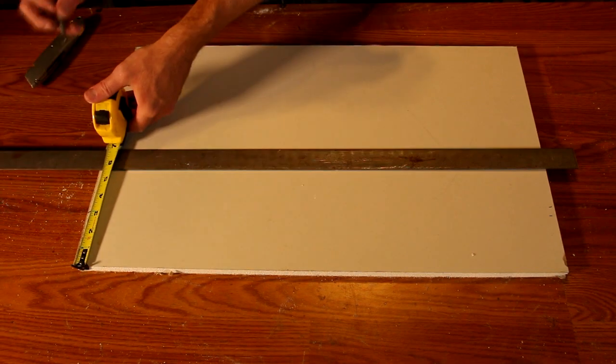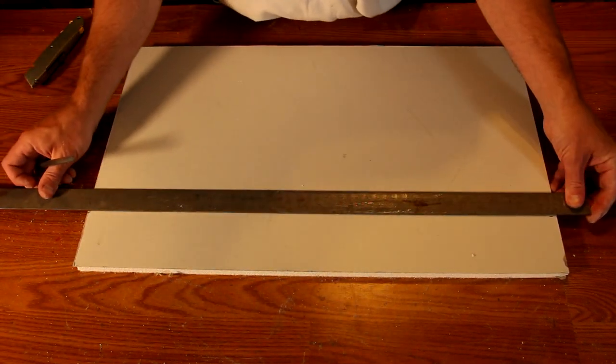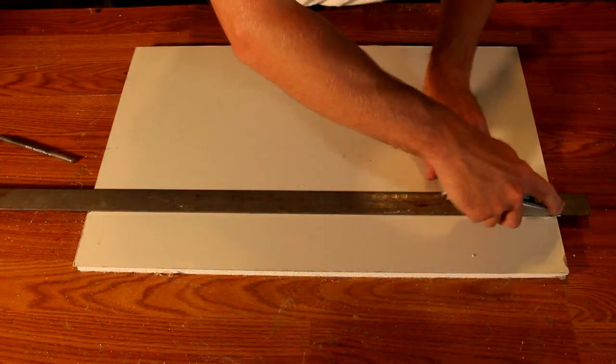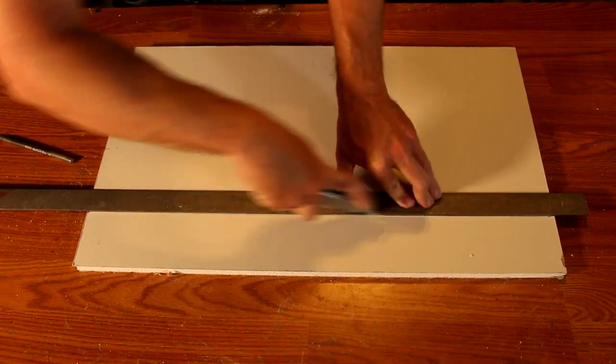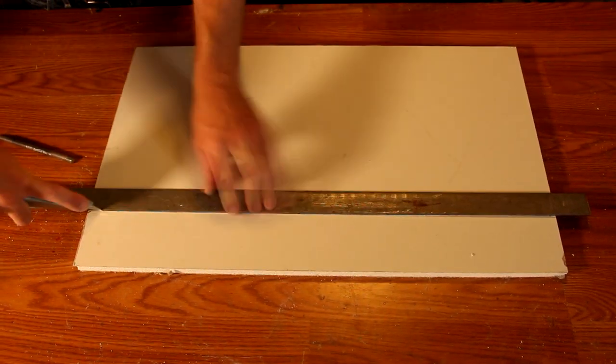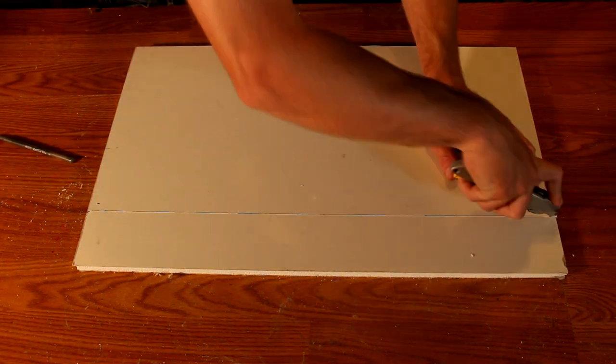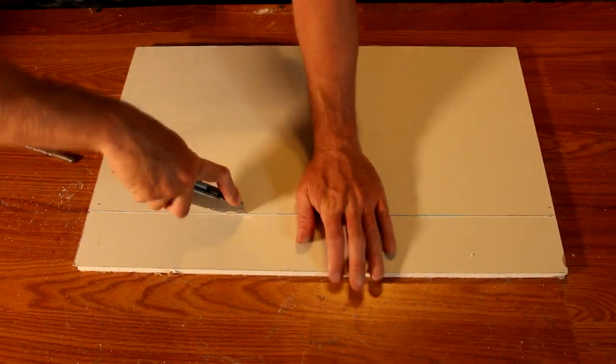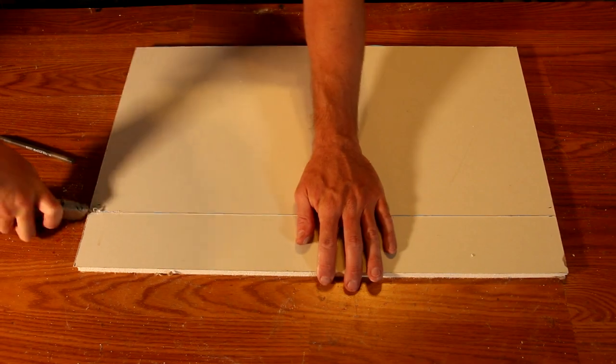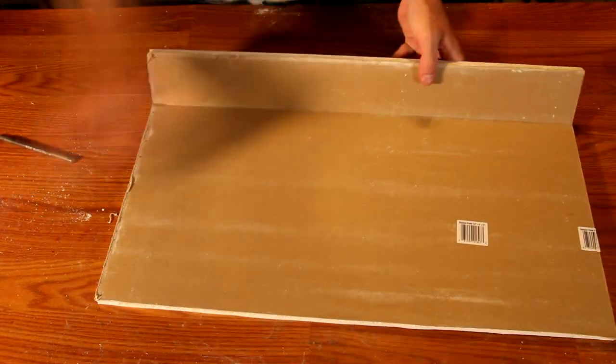Now for the front and back firewalls. These will be three inches tall as they rest on top of the base plate. I decided to be a little bit lazy here and just use my straight edge as a knife guide instead of following my line. Either way you want to do it works just fine. I will need two of these panels, one for the front and one for the back.